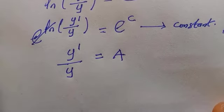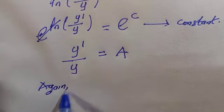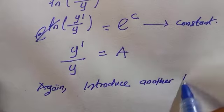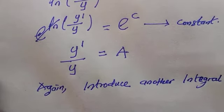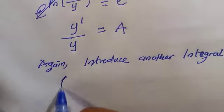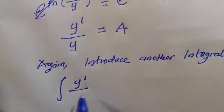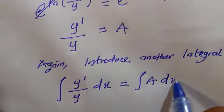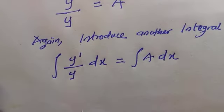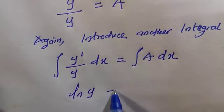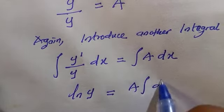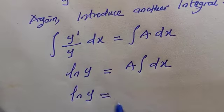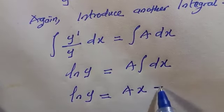Since our aim is to find y, we introduce integration on both sides again. The integral of y'/y with respect to x equals the integral of a with respect to x. The left-hand side is ln(y), and taking the constant a outside, the integral of dx is x, so we have ln(y) equals ax plus b.